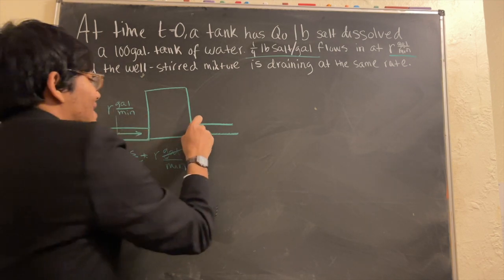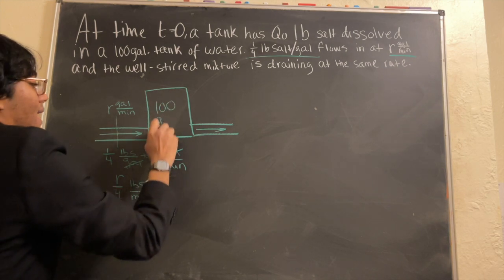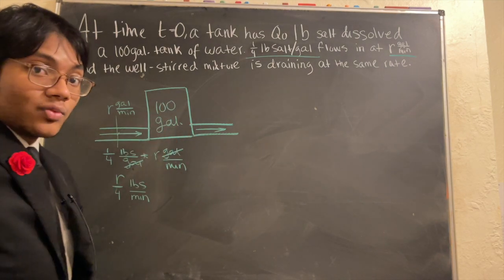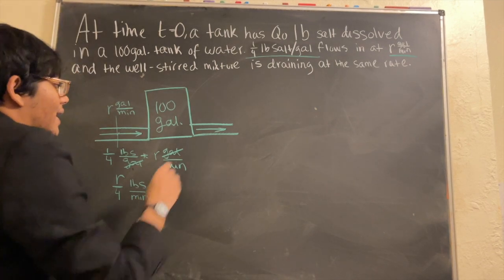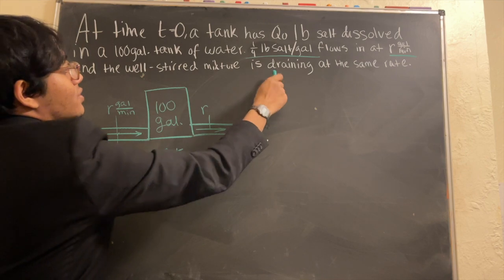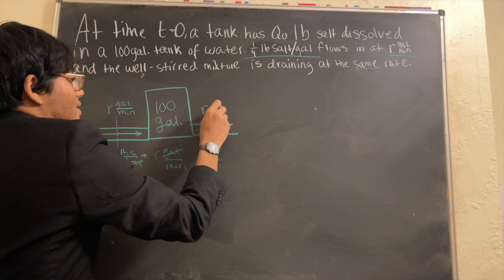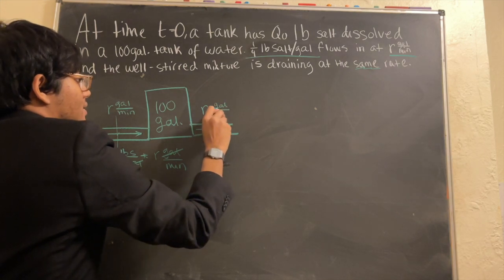Now, what's exiting my system here? What's exiting this 100 gallon tank of water? Well, it's the water salt mixture itself. And it's leaving at the same rate. We're told it's draining at the same rate. And what is that rate? That rate is r gallons per minute.